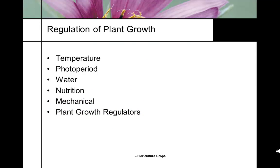What regulates plant growth and changes all these meristems? The things that modify plant growth include temperature, photoperiod, water, nutrition, mechanical changes, mechanical regulation, and plant growth regulators that we can apply.